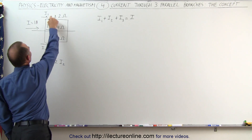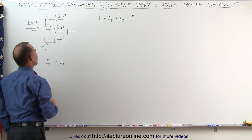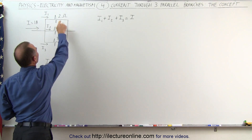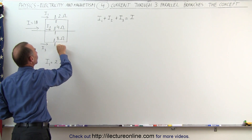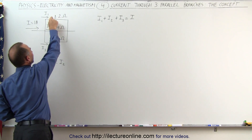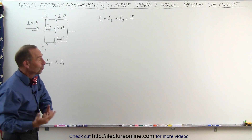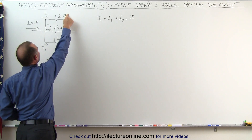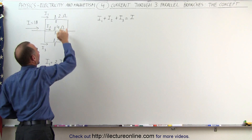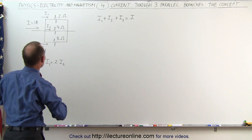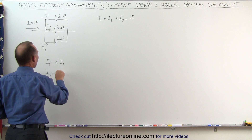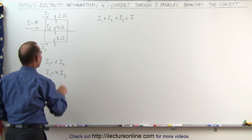Now let's compare I1 to I3. The bottom branch has four times the resistance compared to the top branch, which means one quarter the current flows through it relative to the top branch. Or in reverse, since the top branch has one quarter the resistance of the bottom branch, it carries four times as much current. In other words, I1 is equal to four times I3.